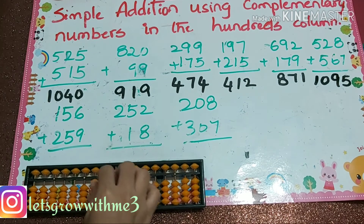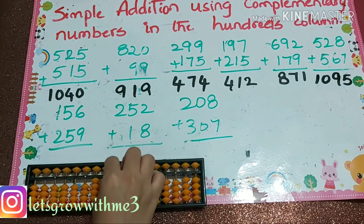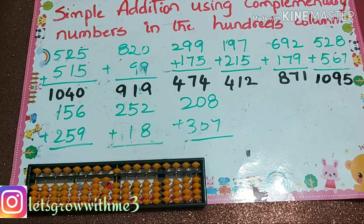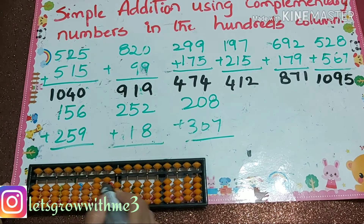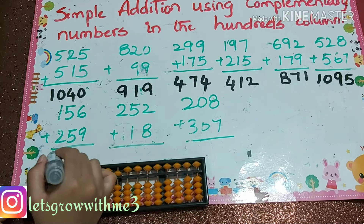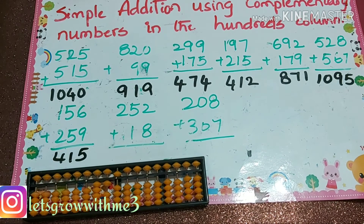Next: 156 plus 259. How to add? Plus 10 minus 5, and 9 plus 10 minus 1. So your answer is 415.